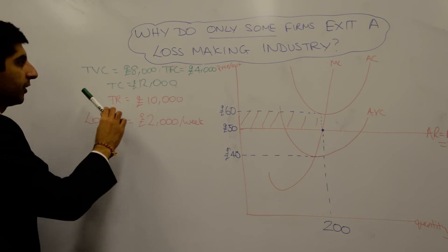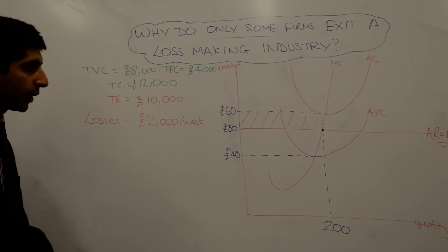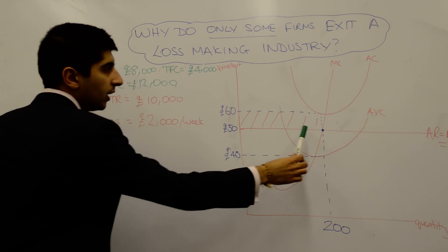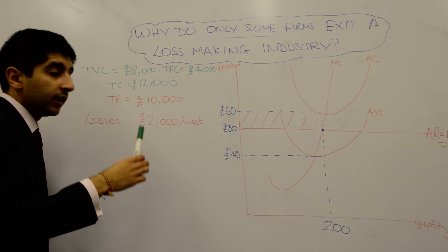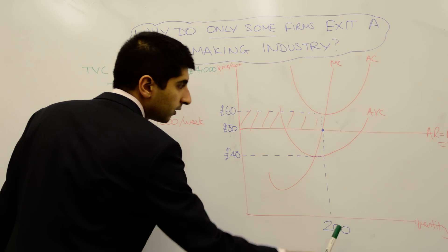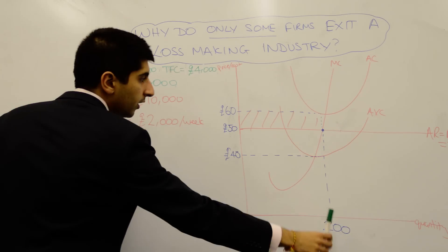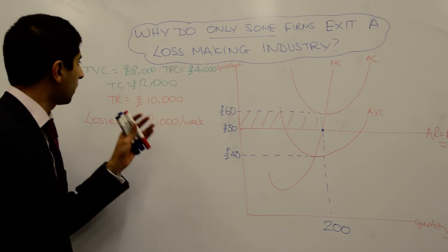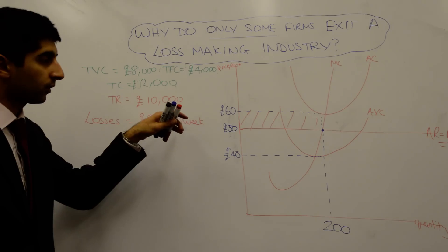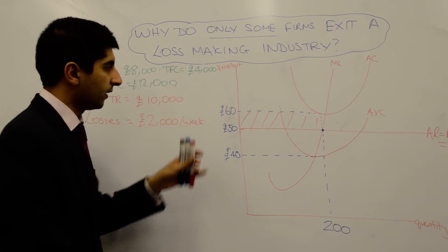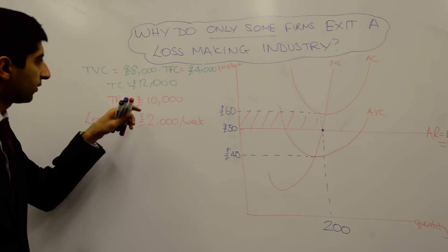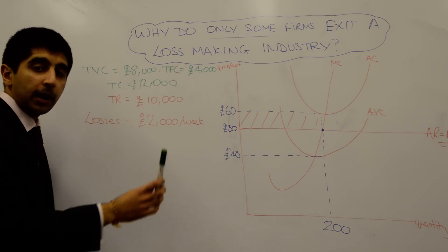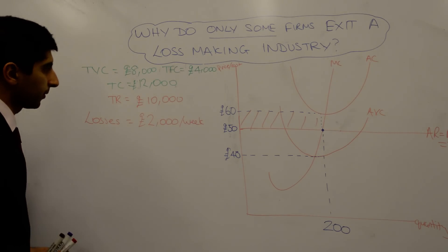The total cost is £12,000 at output level 200. Our fixed costs are the difference — a gap of £20 times 200 — giving £4,000 total fixed cost. Add the two together: total cost is £12,000. We can also work out total revenue: £50 times 200 units sold gives £10,000 total revenue. So we have a loss of £2,000 a week — that's how we work that out.